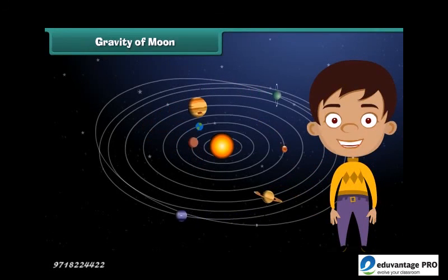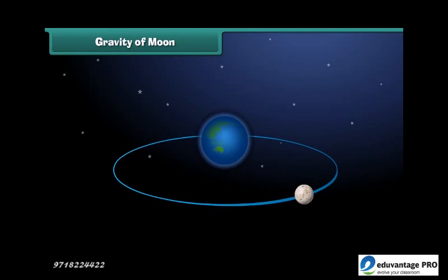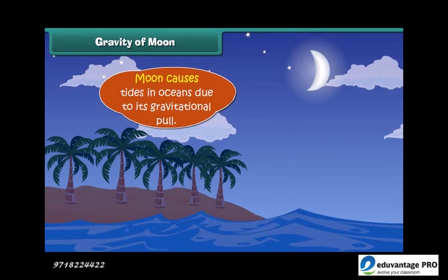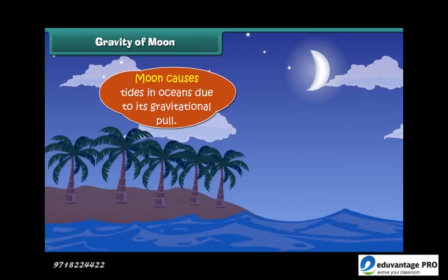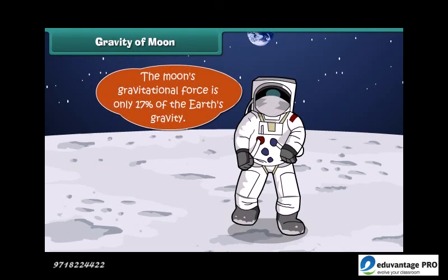You can find big moons in our solar system, but our moon is the biggest compared to the size of Earth, and it is large enough to cause tides in oceans due to its gravitational pull. You'll be surprised to know that the moon's gravitational force is only 17% of the Earth's gravity. For example, a 100 pound (45 kg) person would weigh only 17 pounds, that is 7.6 kilograms on the moon.